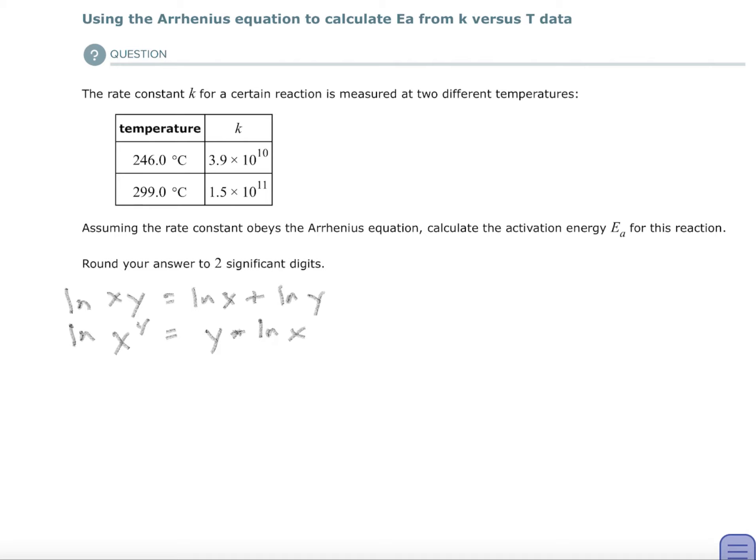A couple of the rules that I wrote down was that the natural log of a product is the sum of the natural logs. So if you have something times something, you're going to have the natural log of the first plus the natural log of the second. Second thing I wrote down is that the natural log of something to a power is the power times the natural log of whatever you're looking at.